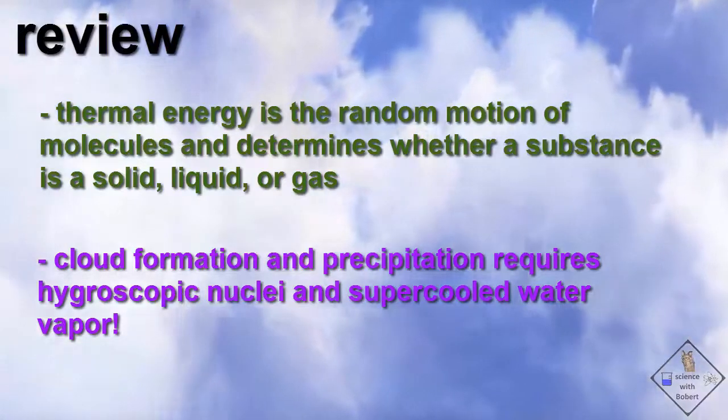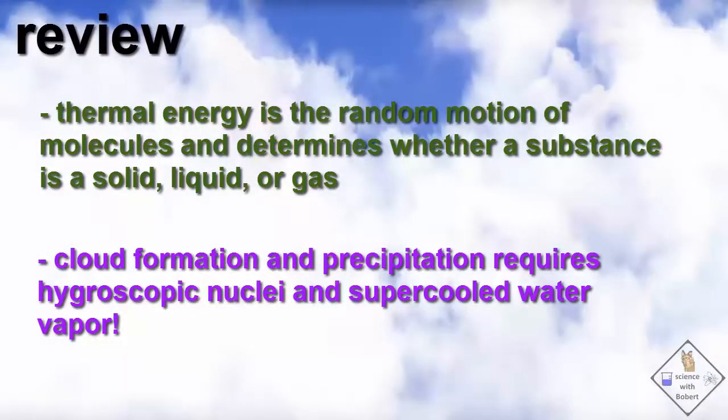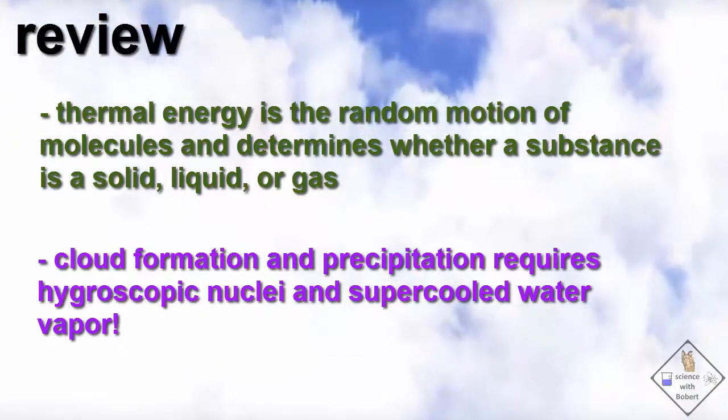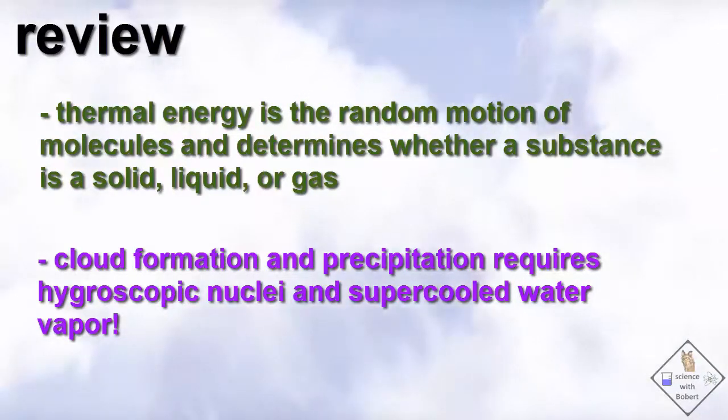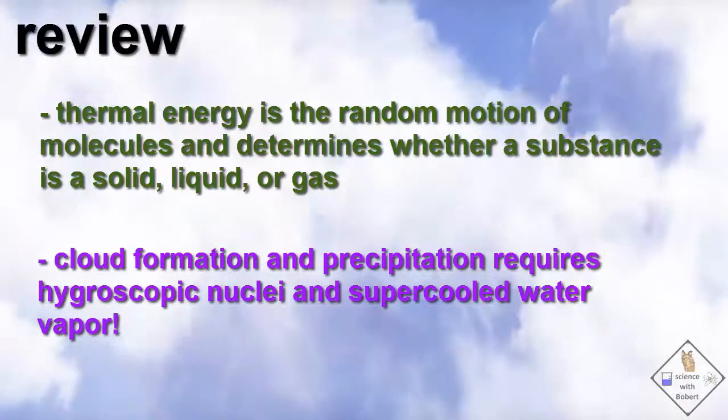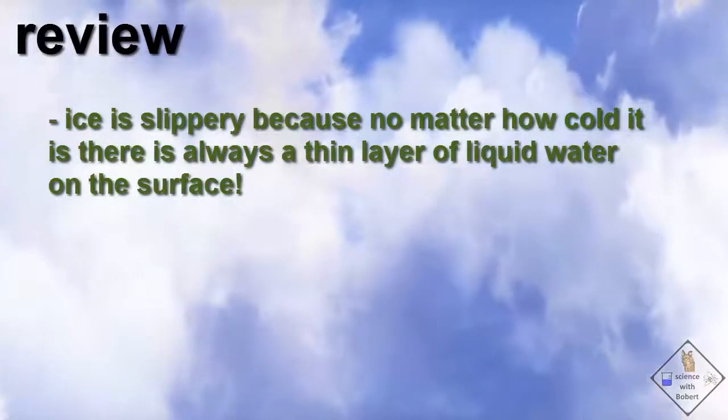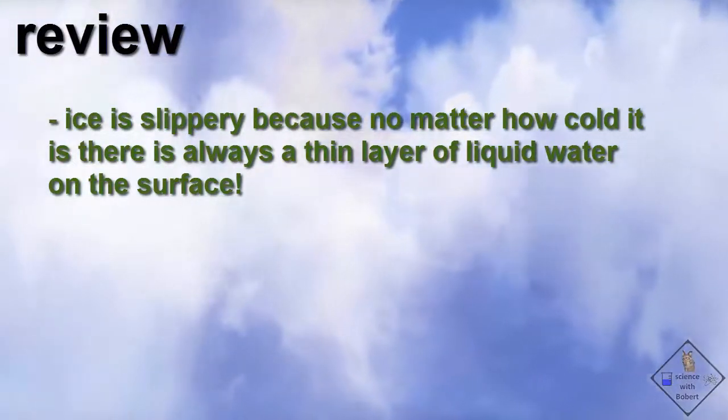Since water droplets in a cloud cannot form on their own, hygroscopic nuclei are required to start the condensation process of water. Scientists have found that rain cannot occur in a cloud that does not have a supercooled region of water vapor. That's a cold region of a cloud with very few hygroscopic nuclei and cold too where water stays in the vapor phase even though it should condense due to the temperature. These regions allow large water droplets to form when a small ice crystal blows through it forming such a large drop that it falls from the cloud due to gravity. And lastly ice is slippery because no matter how cold it gets there's always a thin layer of liquid water on the surface of ice to make it slippery.